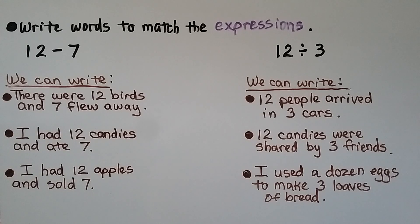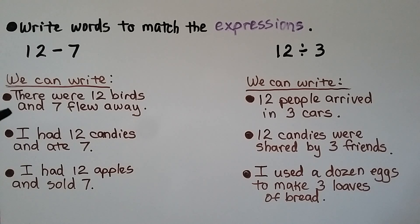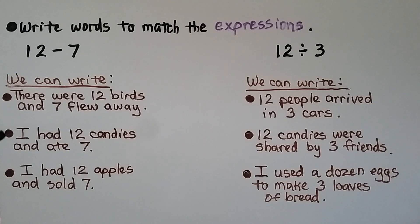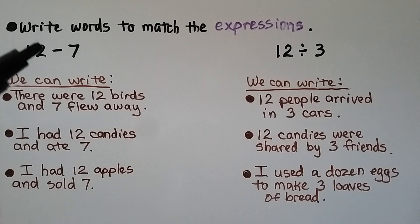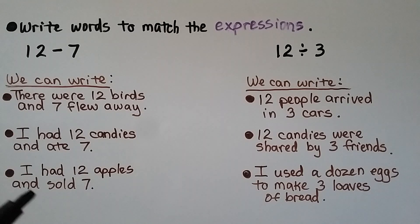If we're told to write words to match an expression, for 12 minus 7 we can write: 'There were 12 birds and 7 flew away,' or 'I had 12 candies and ate 7,' or 'I had 12 apples and sold 7.' All of these would match the expression 12 minus 7.